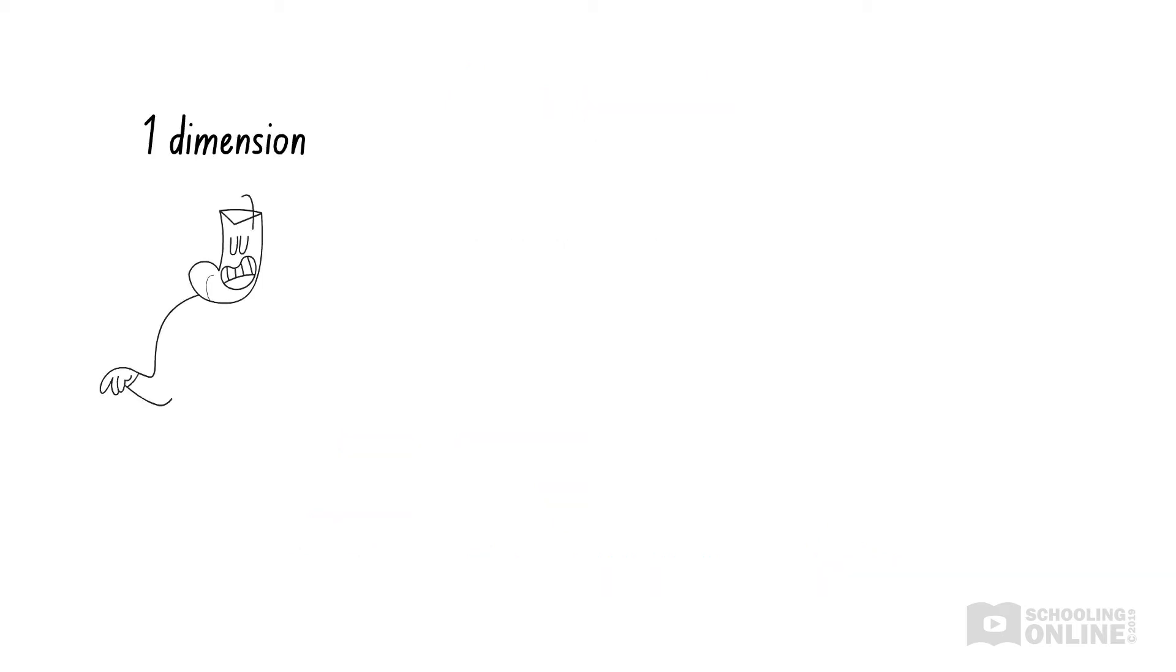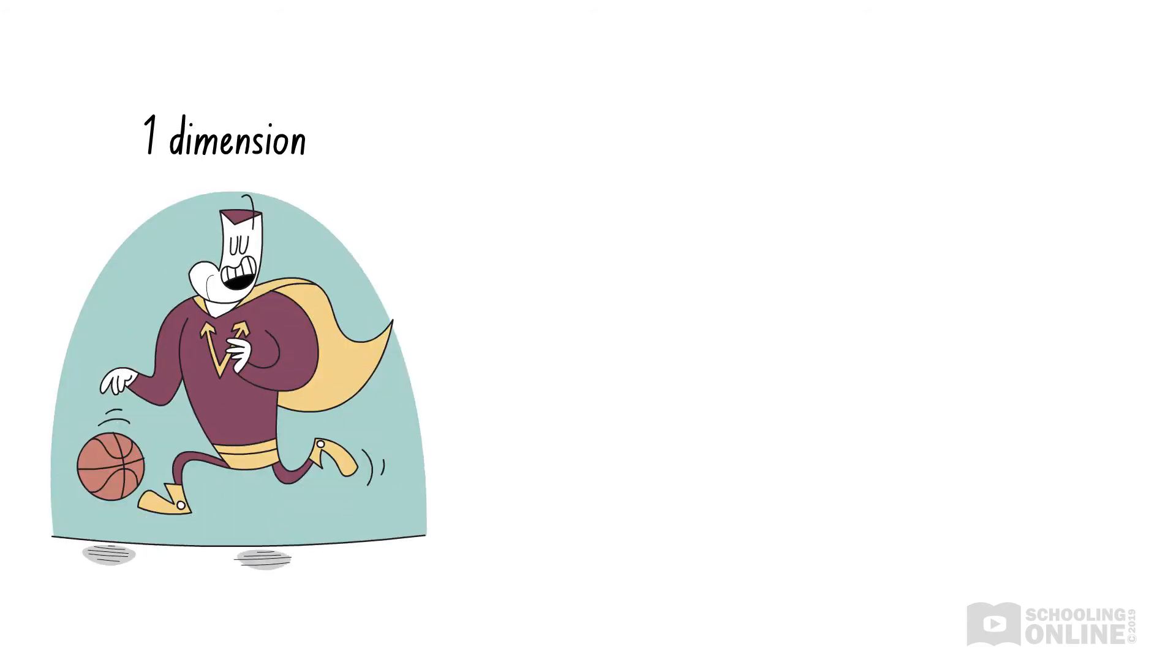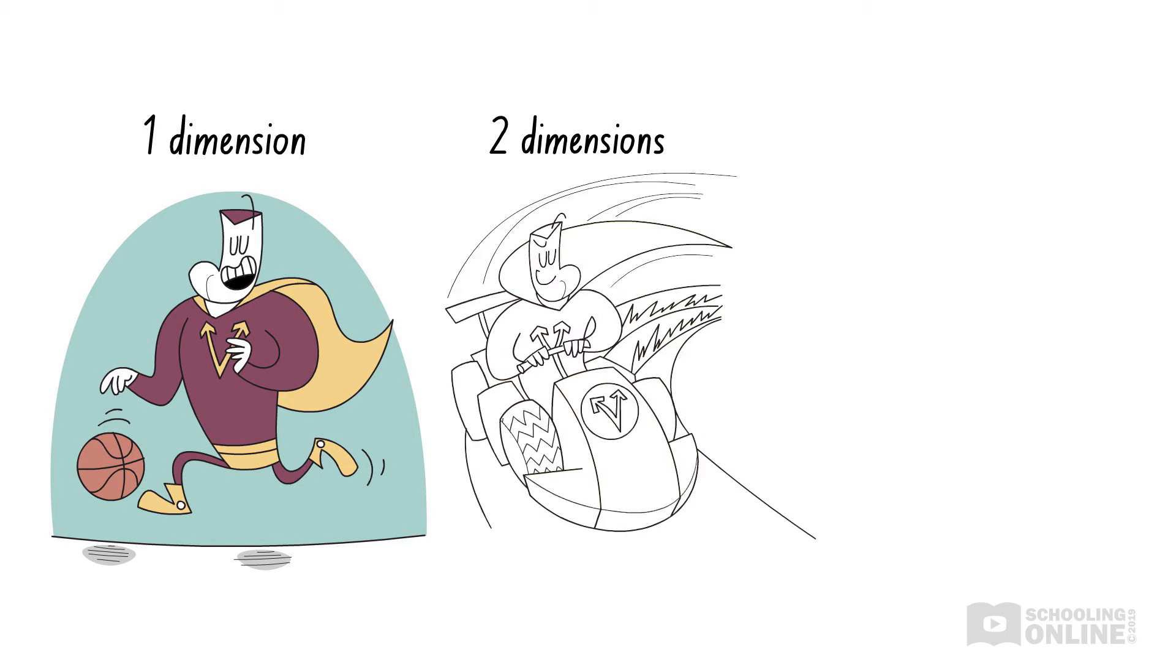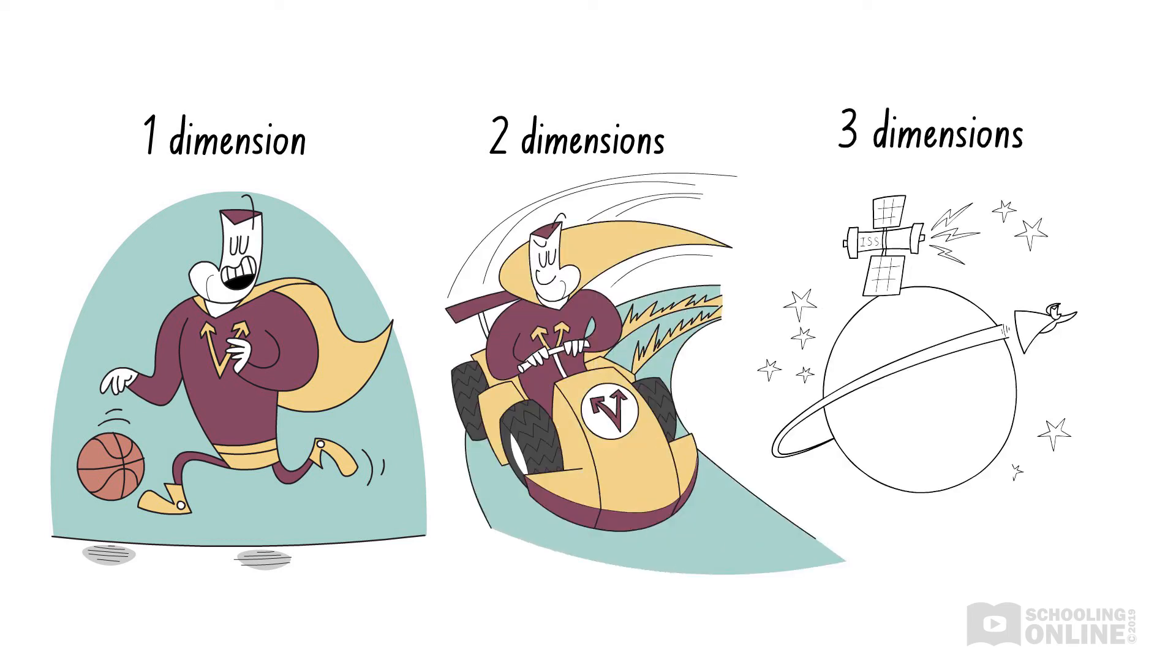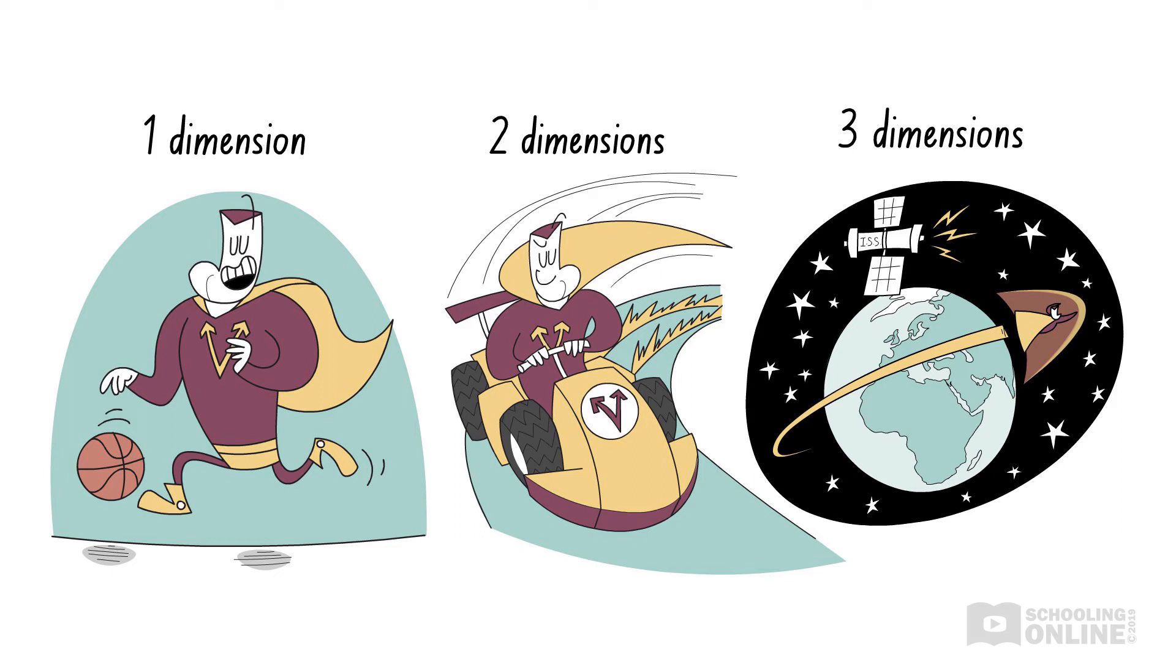In the HSC Physics course, you will encounter vectors in one dimension, like a ball bouncing up and down in a straight line, two dimensions, like a car driving around a racetrack, and three dimensions, like satellites orbiting in space. In the next few lessons, we'll focus on simpler 1D examples, but we'll eventually progress to analysing 2D and 3D situations.